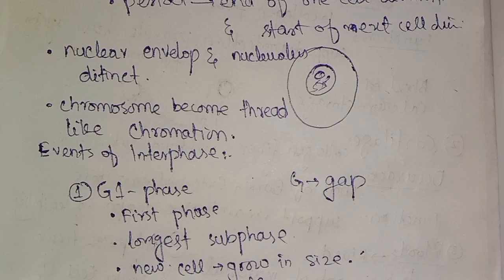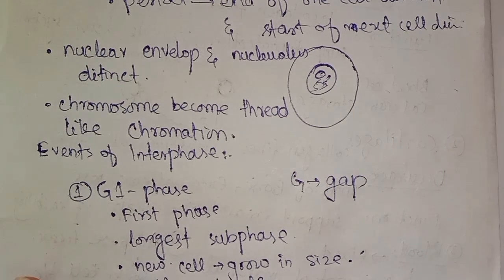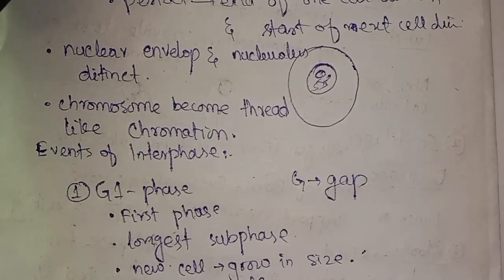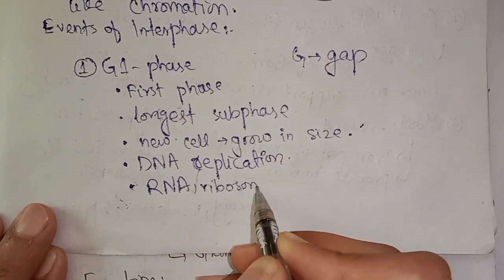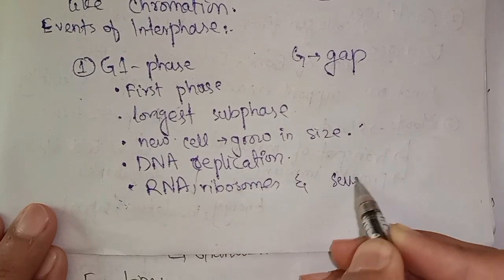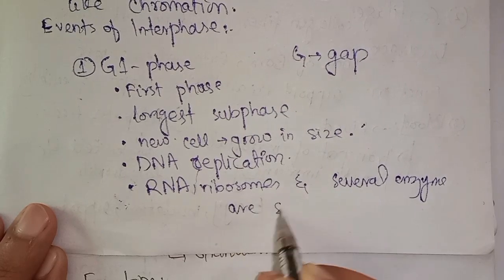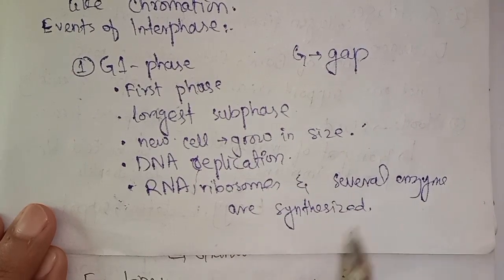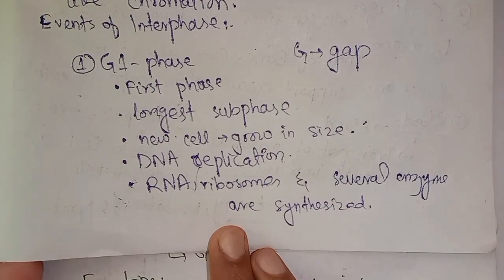During G1 phase, RNA, ribosomes, and several enzymes are synthesized.